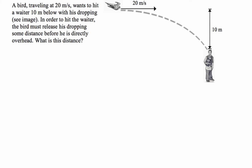In order to hit the waiter, the bird must release his dropping some distance before he is directly overhead. What is the distance?